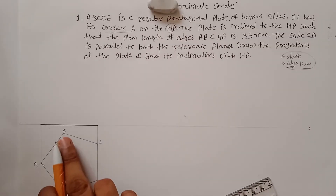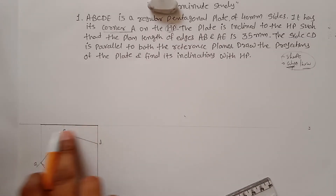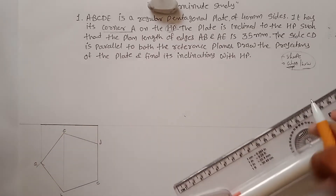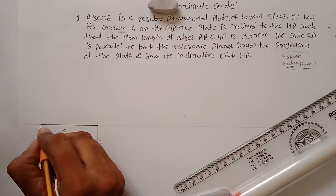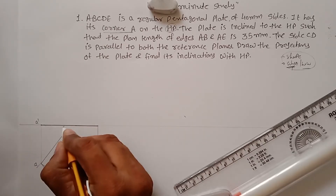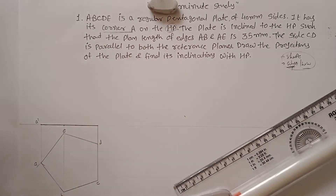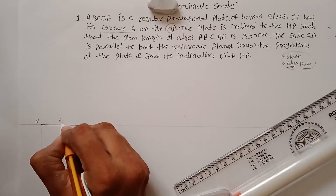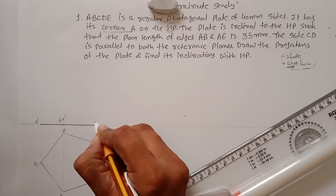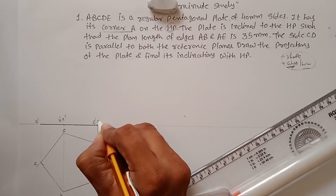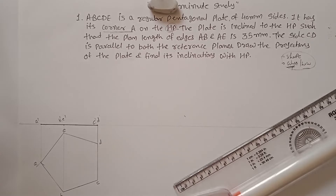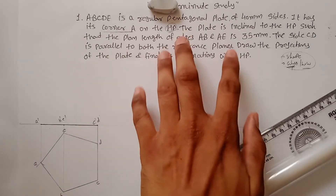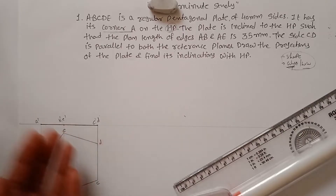Since the plane is resting on HP, draw the front view on the XY line — don't draw above it or leave extra space. The correct way is to draw the front view right on XY. Point A' is at one end; the next point is a combination of B' and E', followed by C' and D'. The first position of the pentagonal plate is now complete.